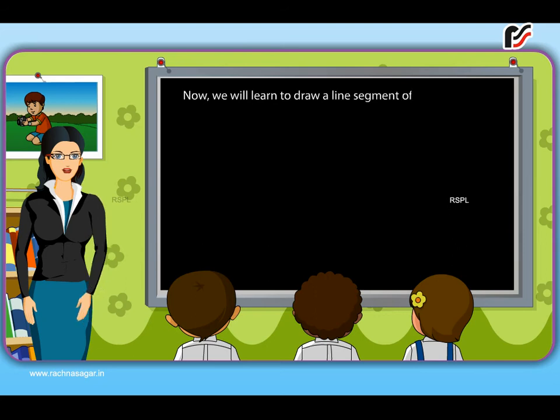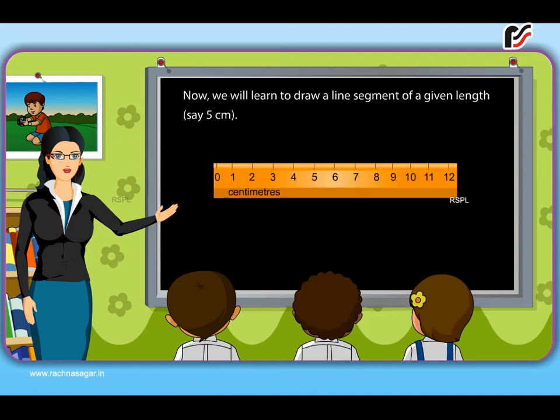Now, we will learn to draw a line segment of a given length, say 5 centimetres. Place and press the scale on the paper. Then, mark two points A and B against the marks 0 and 5 of the scale. Keeping the scale evenly, move the pencil from A to B along the edge of the scale. So, the line segment AB is of length 5 centimetres.